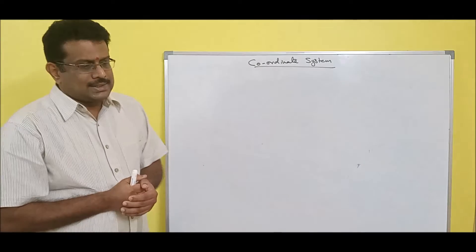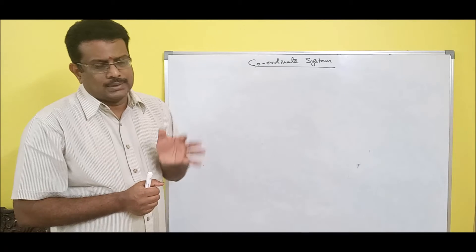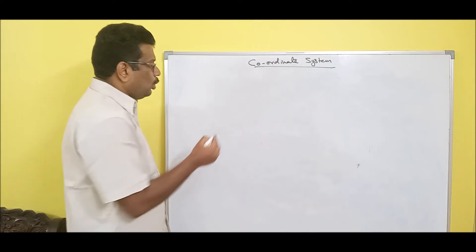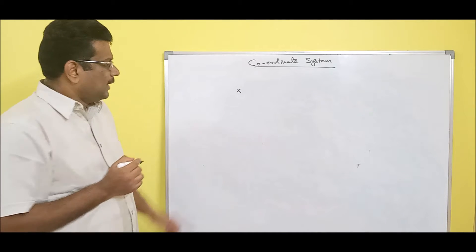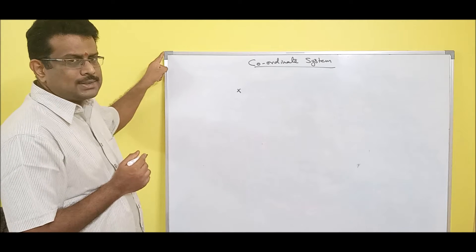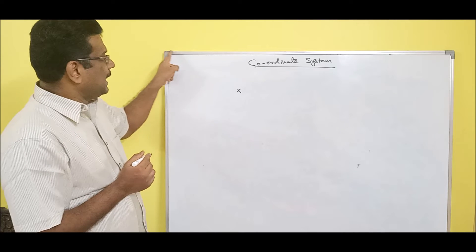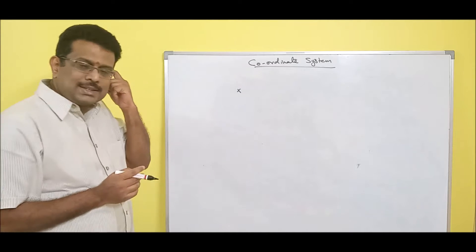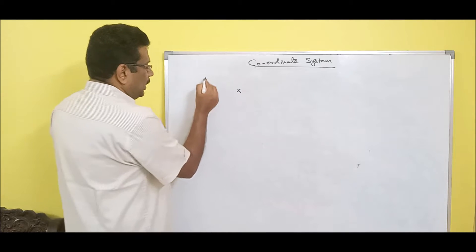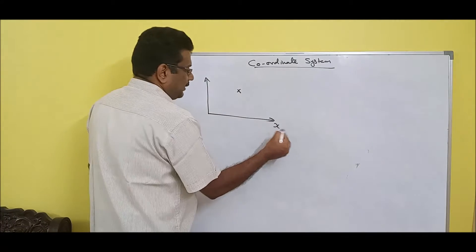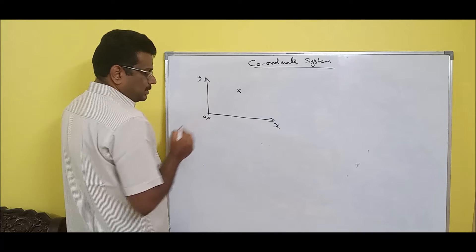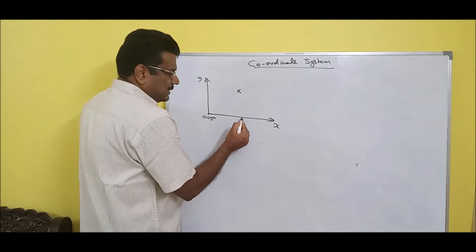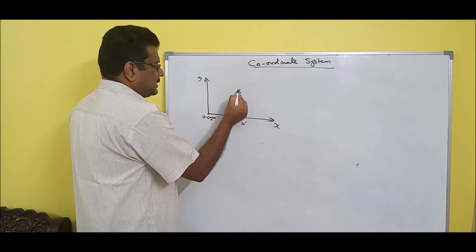Now, coordinate system. Define coordinate system — it is a method to define the location of an object. I just made a cross on the board — where is this cross? If you take this corner as the origin, x-axis and y-axis: x-axis 20 centimeters, y-axis 10 centimeters, I get the location. So what do you mean by coordinate system? How to locate a position. If I take two axes x and y, we call it the origin, 0 comma 0.